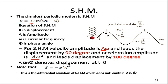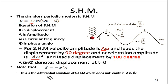Note that A sin φ denotes displacement at t = 0. Differentiating velocity with respect to time gives ẍ = −ω²x, which is the differential equation of simple harmonic motion. This equation does not contain A or φ.